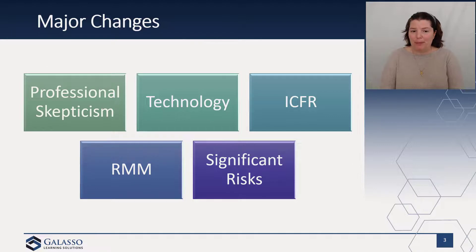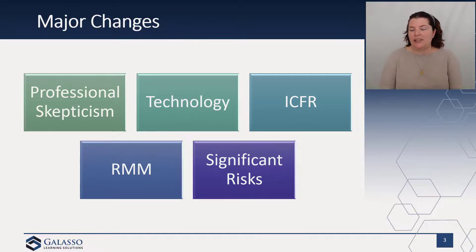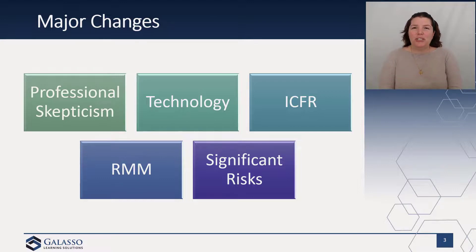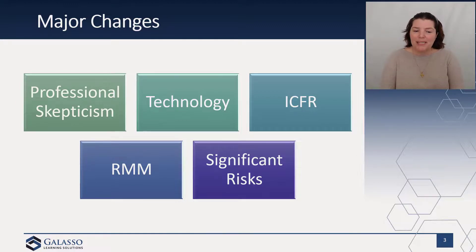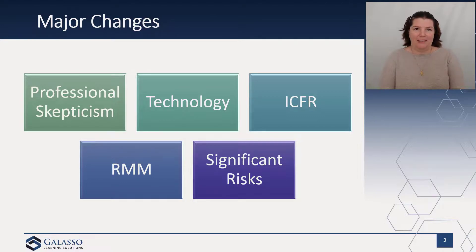There is an explicit requirement that the auditor should determine whether one or more control deficiencies have been identified. This is really just a stand-back provision that says, look and see — is there something that we really need to report here? One thing people are going to have to get used to is that risk assessment is dynamic and iterative. It's not a straight line — it is a circle. As new information comes in, you have to go back and refine your risk assessment process. Your risk identification followed by assessment isn't a one-and-done; it's a constant iterative process.